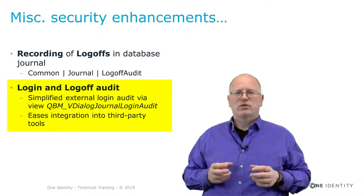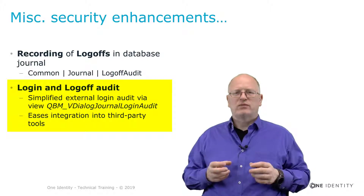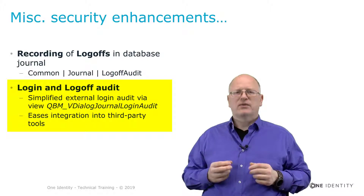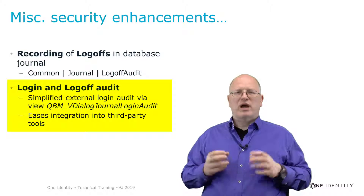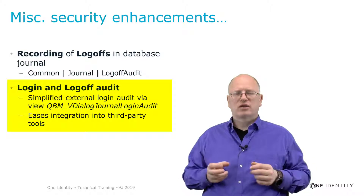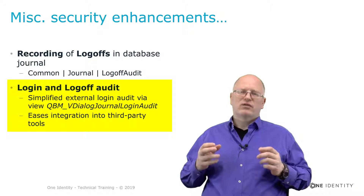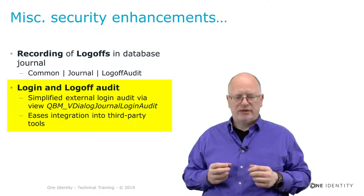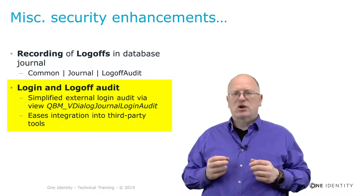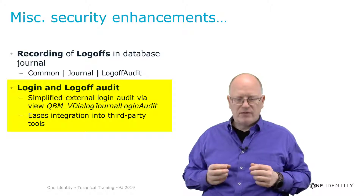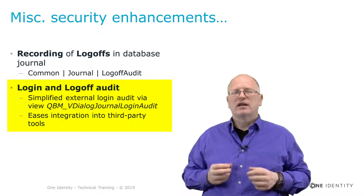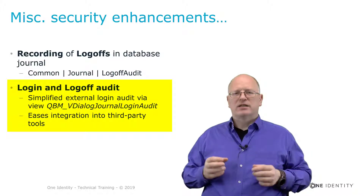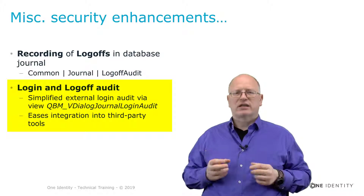It is similar to Microsoft Windows where you can look into the event log and see the audit track showing login and logoff events, or like Linux which has a specific log for security. For Identity Manager, something like that now exists as well. This is a specific view named QBM V Dialog Journal Log Audit, which looks at the database journal and filters out just the login and logoff attempts.